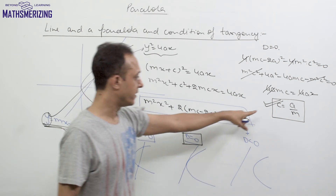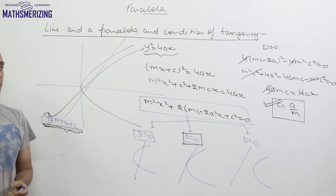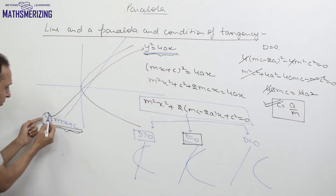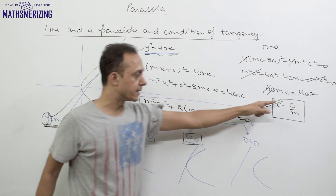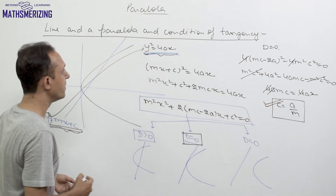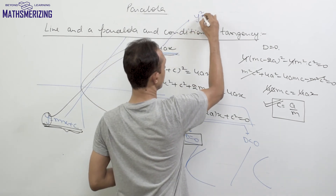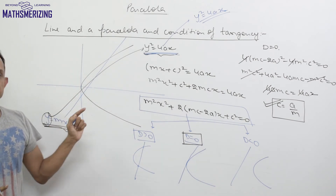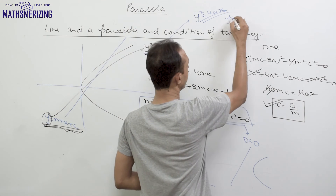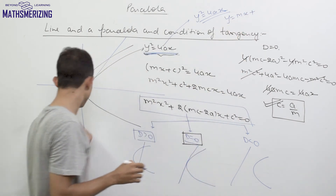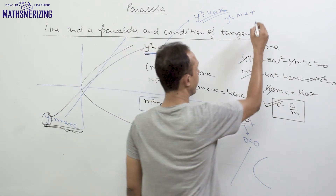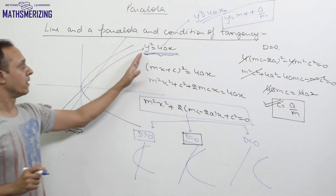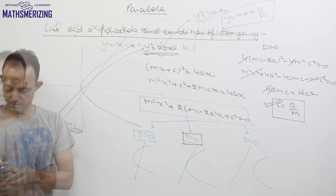Once we have this value of c, we can write the equation of a tangent to the parabola. For the parabola y² = 4ax, the line y = mx + c is a tangent when c = a/m. Therefore, the equation of any general tangent to the parabola y² = 4ax is y = mx + a/m.